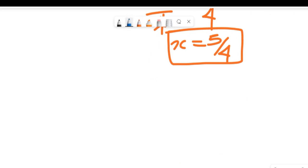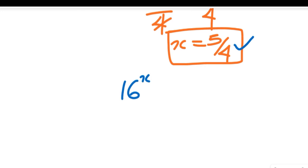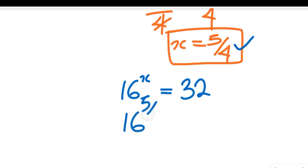Now I want to check if our solution is truly correct. Our x is equal to 5 divided by 4, and we are given 16 to the power of x equal to 32. So we substitute: 16 to the power of 5 divided by 4 — will it give us 32? Let's find that out.